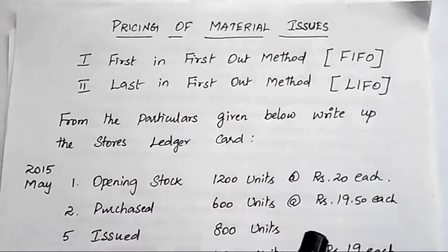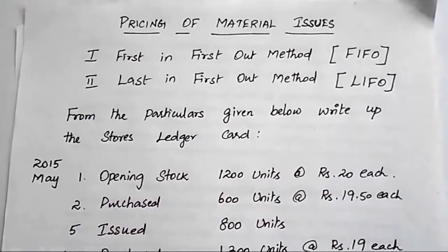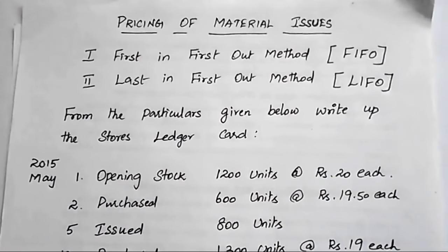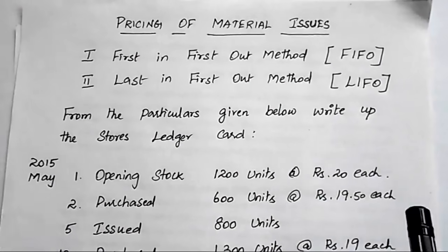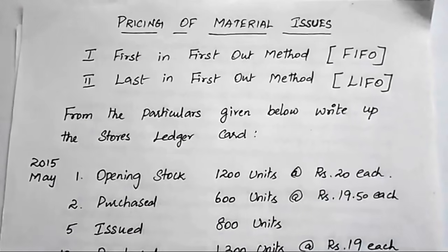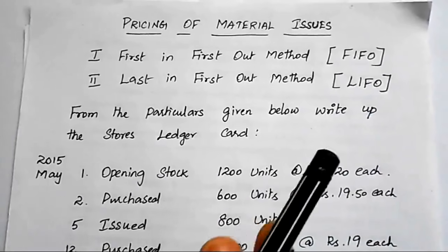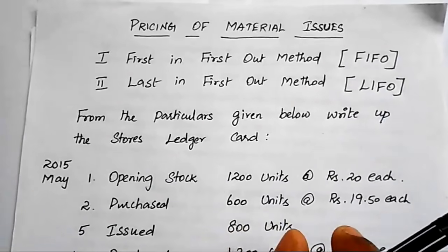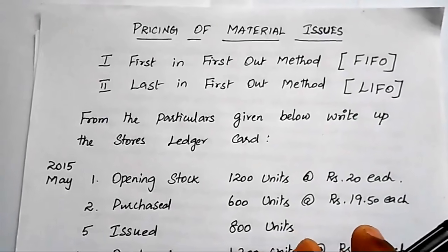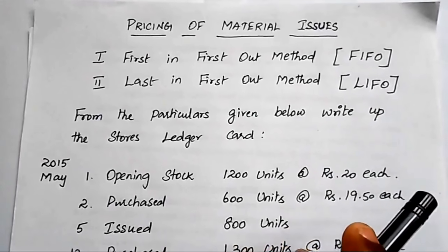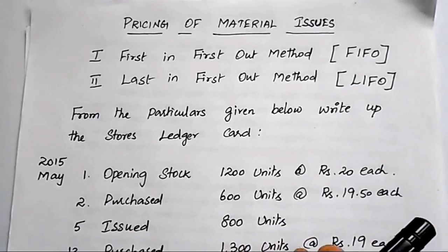Generally in an organization, we will have different departments — purchase department, stores department, production department, finance department, HR department. In the purchase department, their main function is to acquire the raw material from different suppliers.